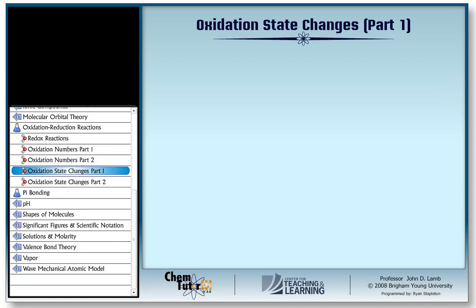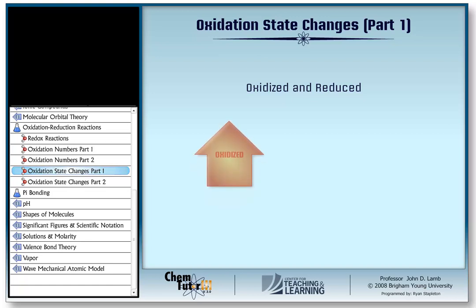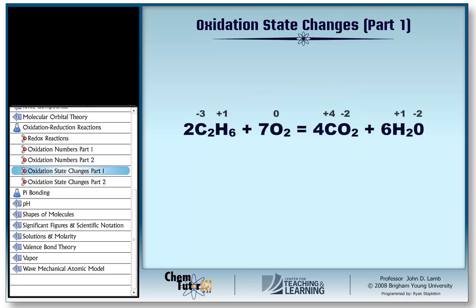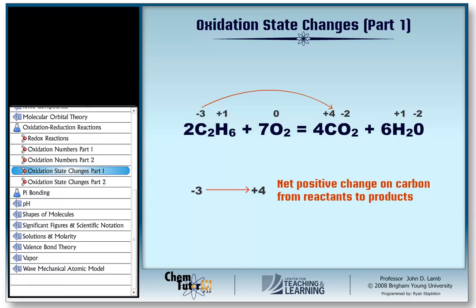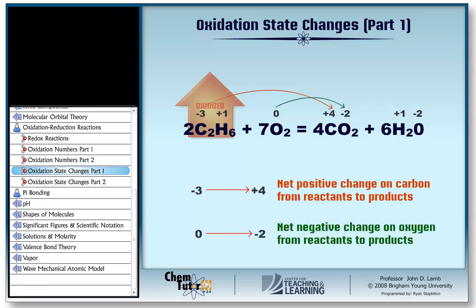The first new pair of terms is oxidized and reduced. When the oxidation state of an element goes up during the reaction, we say that the species containing that element has been oxidized. When the oxidation state goes down, we say that species has been reduced. In the combustion reaction, carbon was oxidized — its oxidation state went up — so the species that was oxidized is ethane. Conversely, oxygen was reduced, so the species that was reduced was dioxygen.